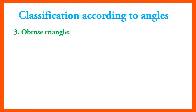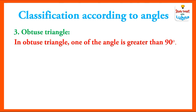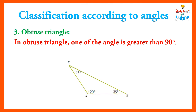The third triangle classified according to angle is obtuse triangle. In an obtuse triangle, one of the angles is greater than 90 degrees. So this type of triangle is called obtuse triangle.